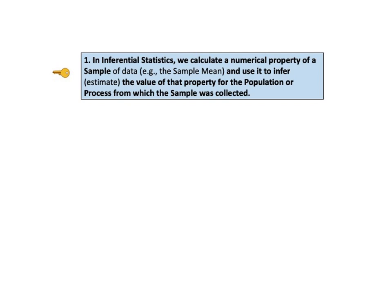First, KTU number 1 says: in inferential statistics, we calculate a numerical property of a sample of data — for example, the sample mean — and we use it to infer, that is to estimate, the value of that property for the population or process from which the sample was collected.